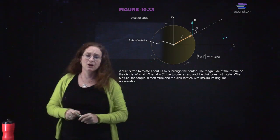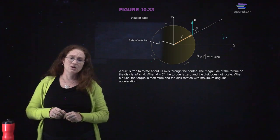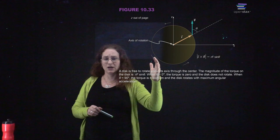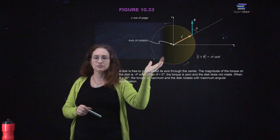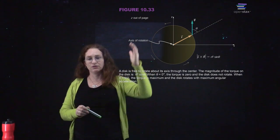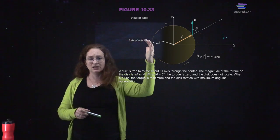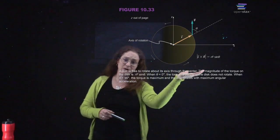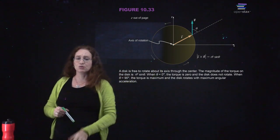A disk is free to rotate about its axis through the center. The magnitude of the torque on the disk is r f sine theta. When theta equals zero, the torque is zero and the disk does not rotate. When theta is equal to 90 degrees, so if your force is perpendicular to the moment arm, you get the maximum torque.